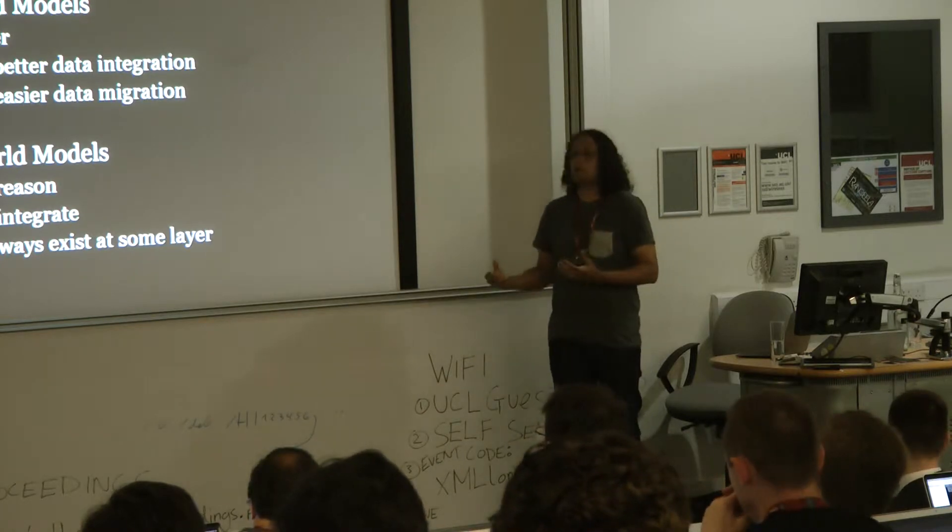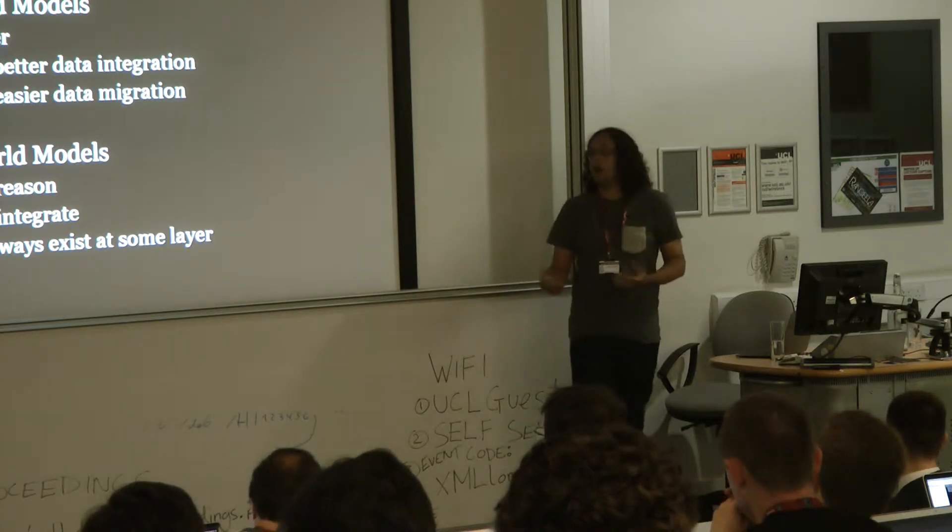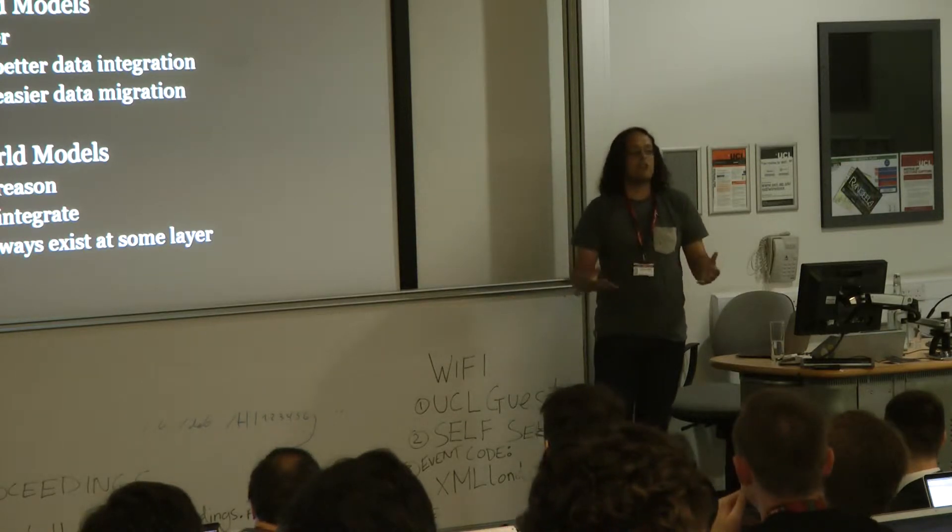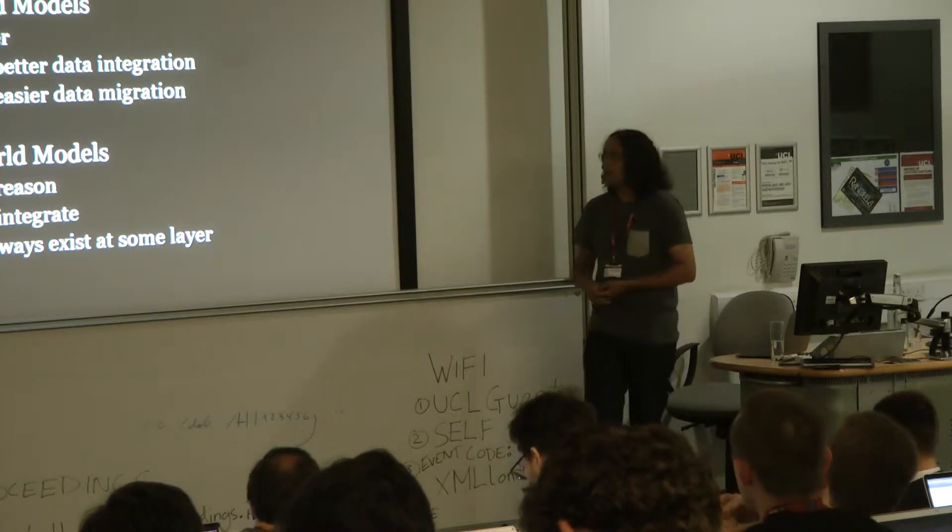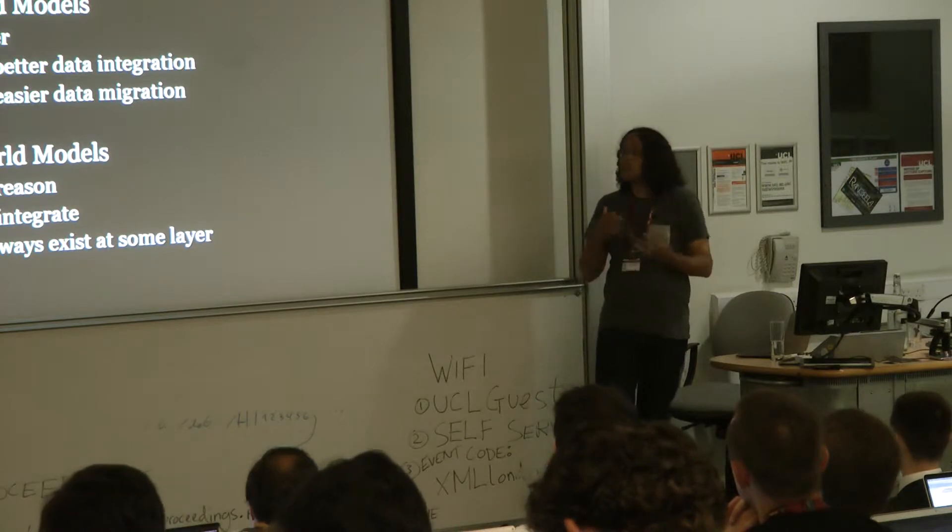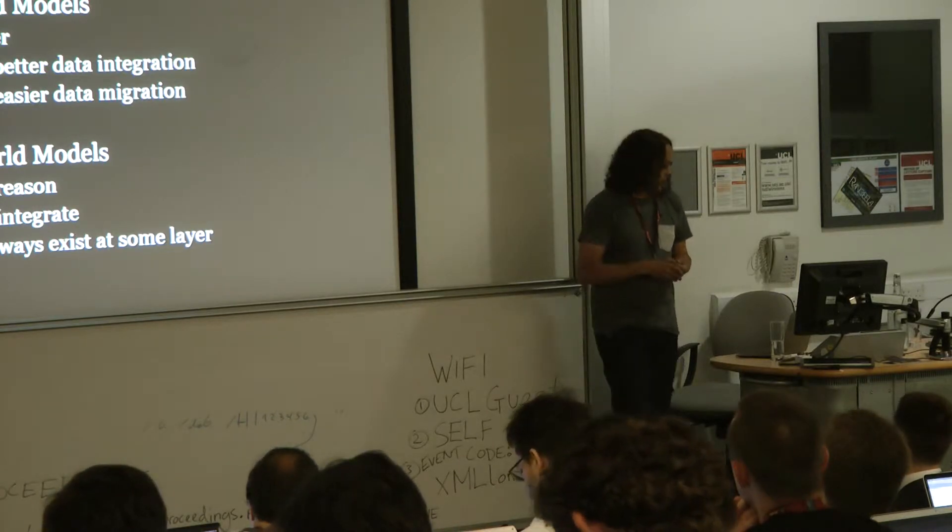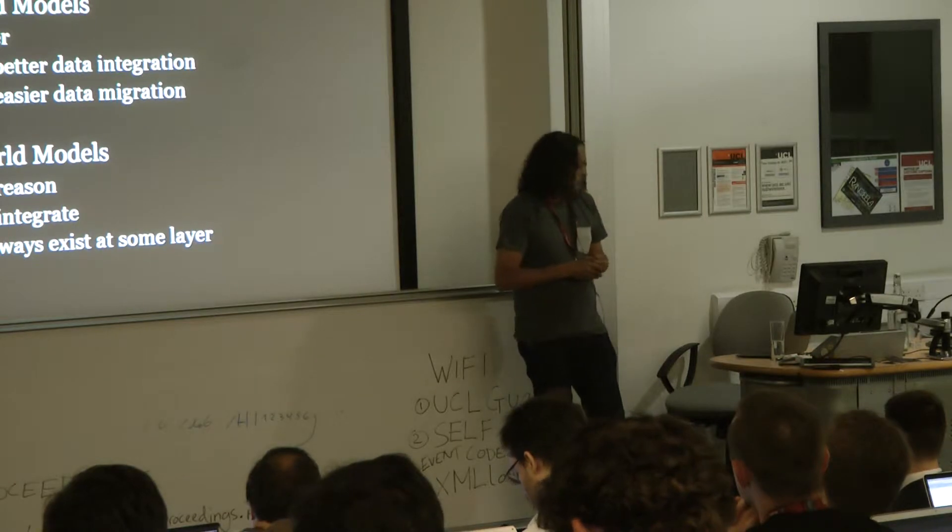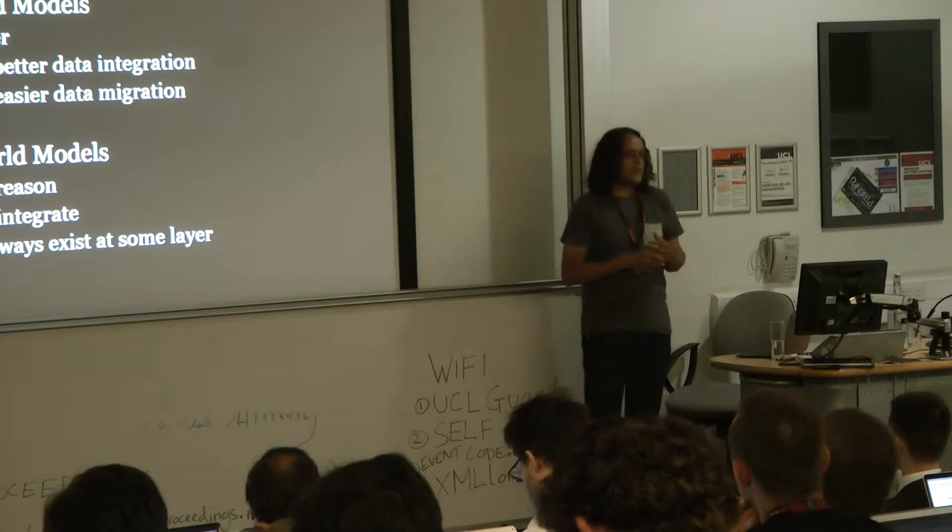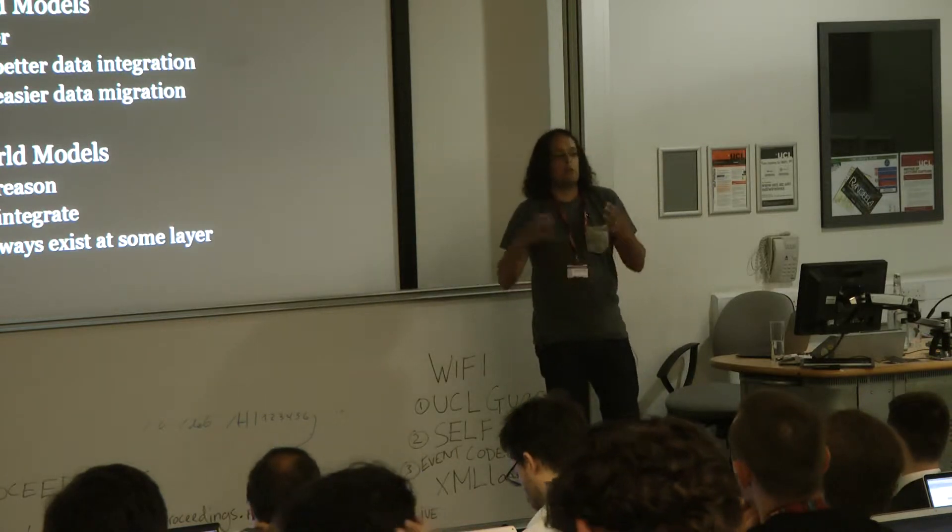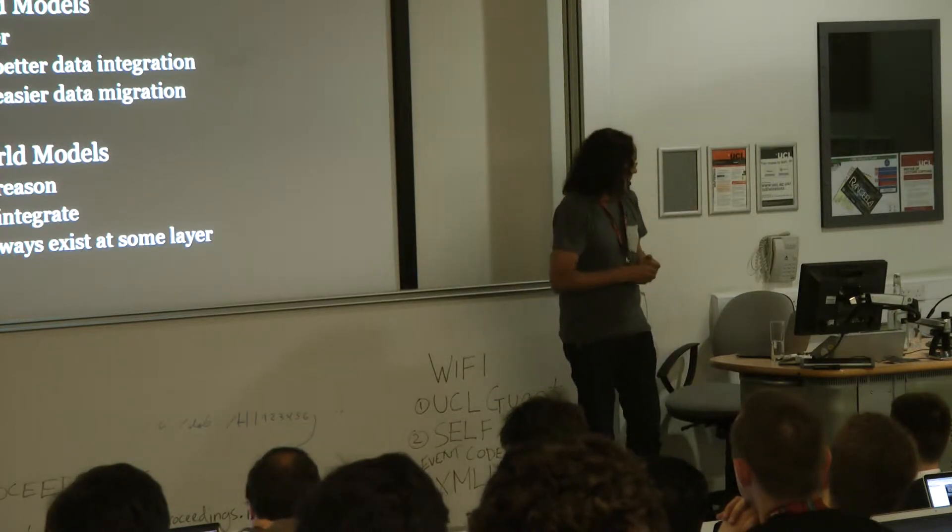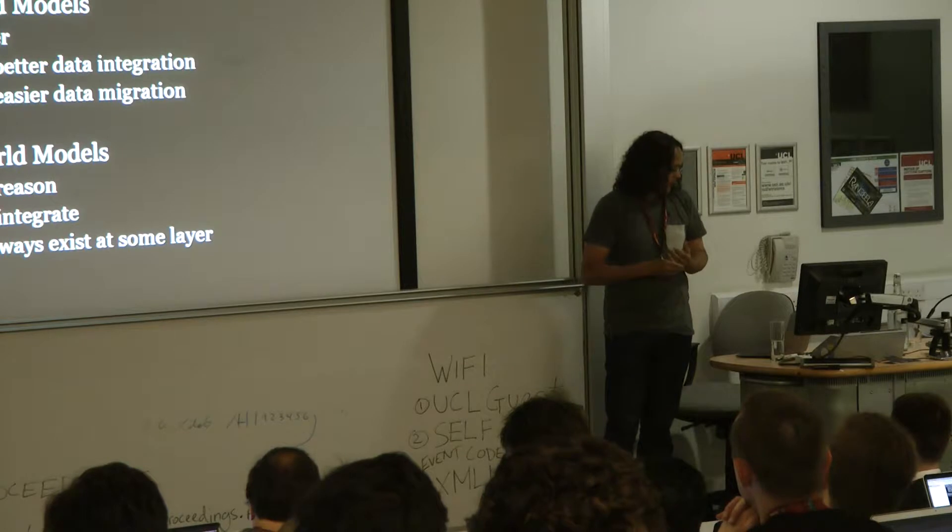RDF has an open-world assumption, and this is because it's built for the web. That's the only way in which you can scale out to the web. You have to work with the fact that you always have partial knowledge. The nice thing about open-world models is that they scale better, they allow you to do data integration much more easily between different models, different viewpoints of the world, and they also allow for easier, ongoing data migration as you want to expand or refine your model. It's much easier to do that if you haven't closed it down into a particular closed-world model.